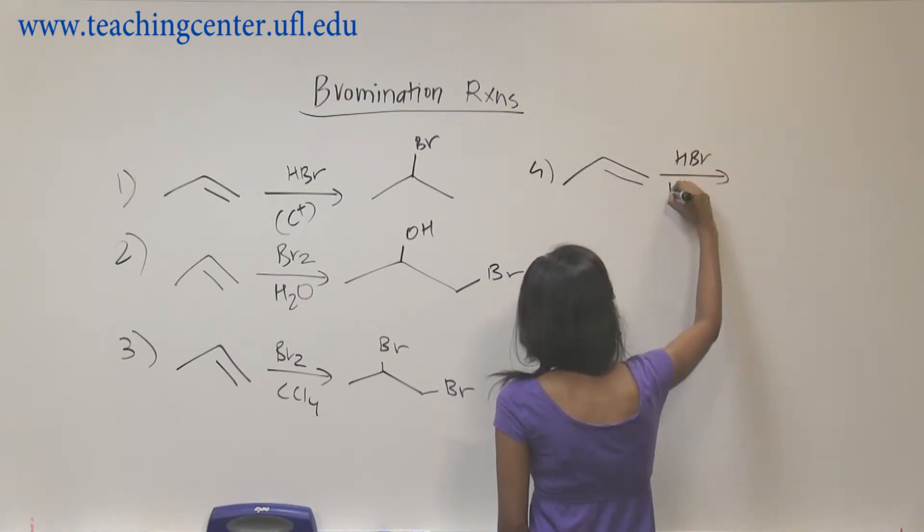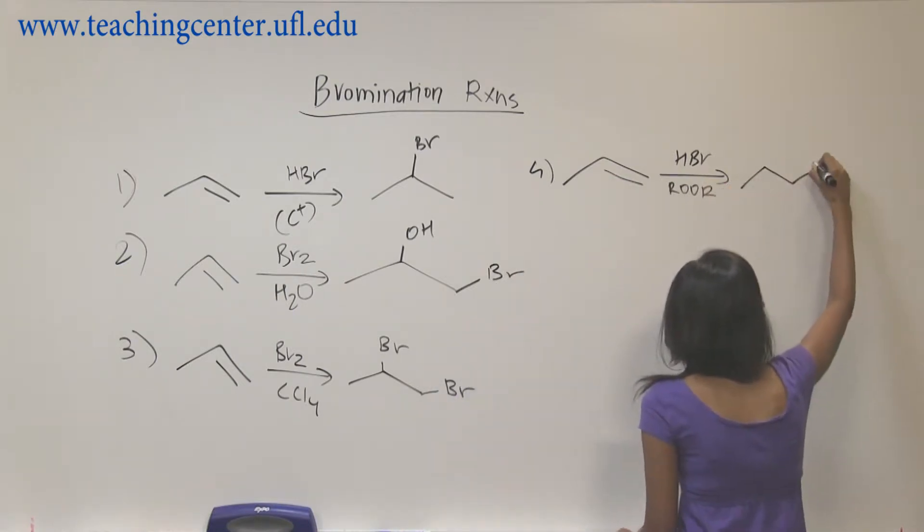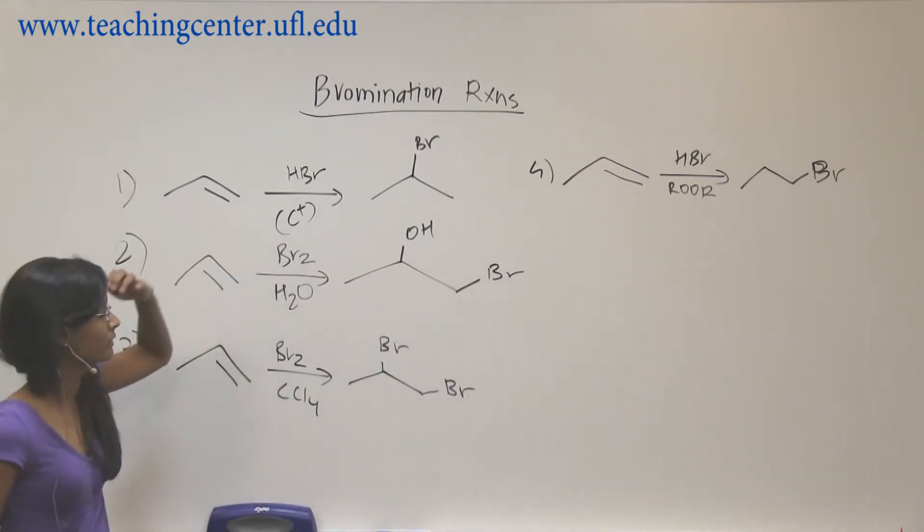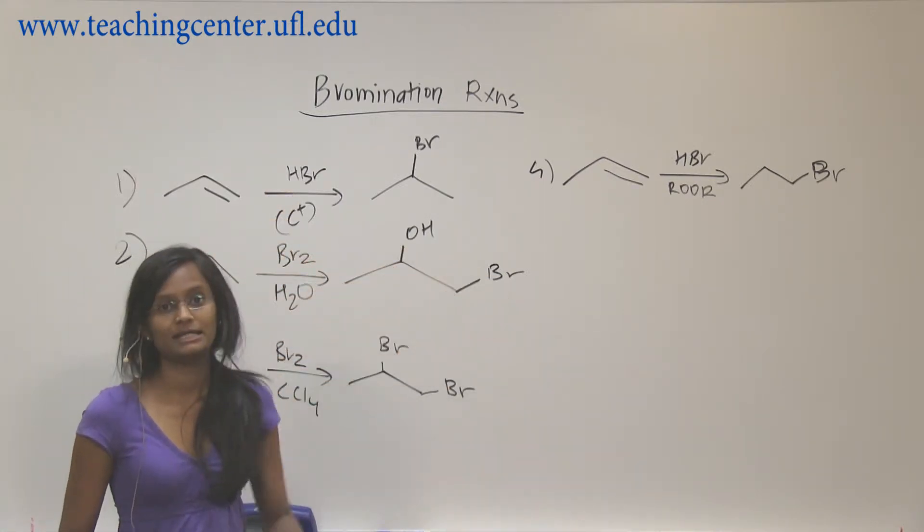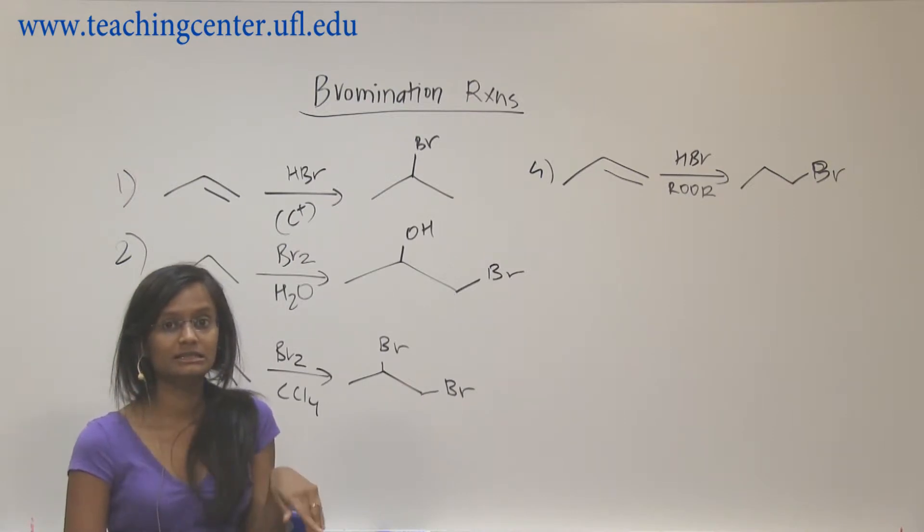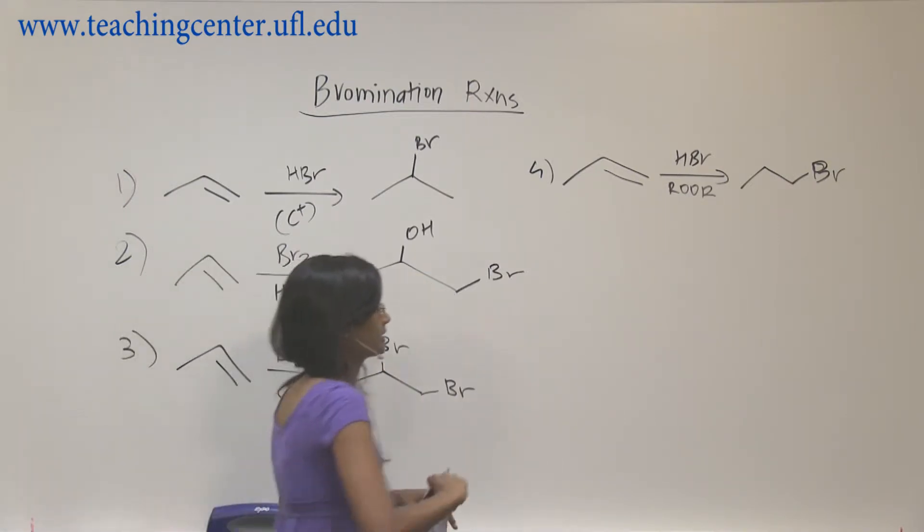Then we have HBr and peroxide where you add anti-Markovnikov. So this is the difference between first and fourth - you add HBr, the reaction is with HBr, but when you add HBr and peroxide it's going to be a different mechanism. It's a radical mechanism and you add your bromine to the least substituted side. So this is anti-Markovnikov.